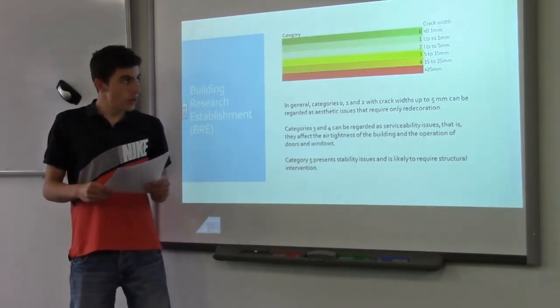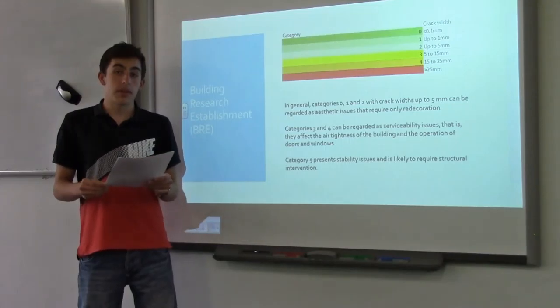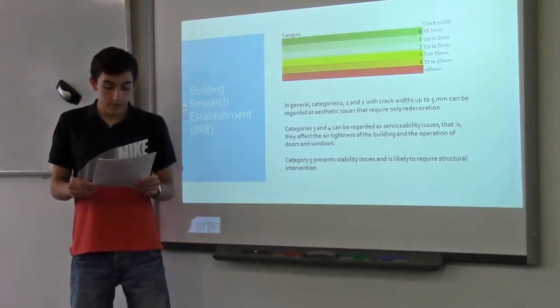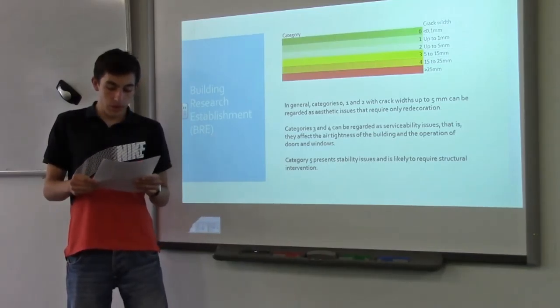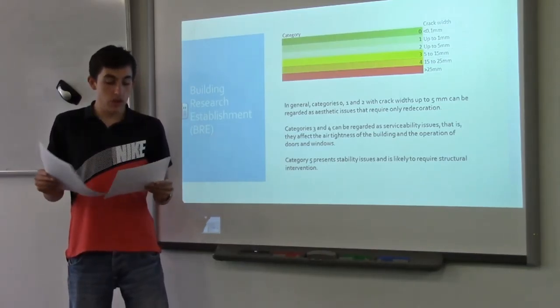Category 2 in which cracks are up to 5 millimetres, the cracks are not visible externally. Some external repointing may be required to ensure weather tightness. Doors and windows may stick slightly and require easing and adjusting.